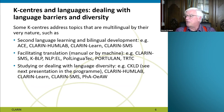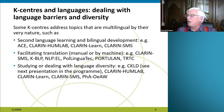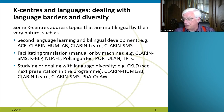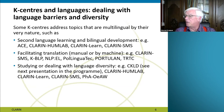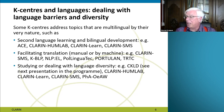Some K-centers address topics that are very multilingual by their very nature, like second language learning and bilingual development — children who are educated bilingually. We have a number of centers with very good expertise in these areas. There is also translation, necessitated by the multilingual nature of Europe — both manual and machine translation — covered by centers like CLARIN SMS, KBLP, NLPL, PoLingwaTek, Portolan, and TRTC. We also have centers focusing on studying language diversity, including CKLD, which Andreas already mentioned, as well as CLARIN HumLab, CLARIN Learn, CLARIN Messes, and the Phonogram Archive in Austria.